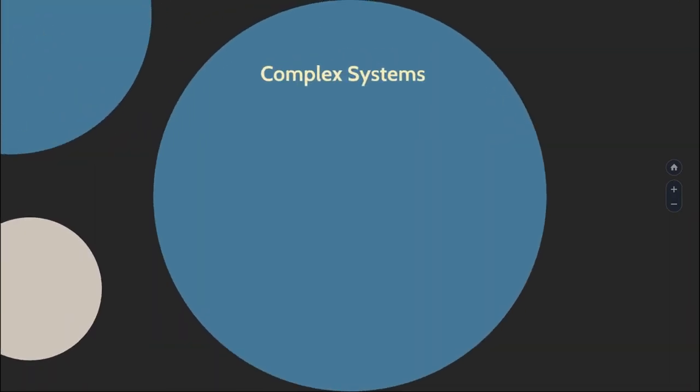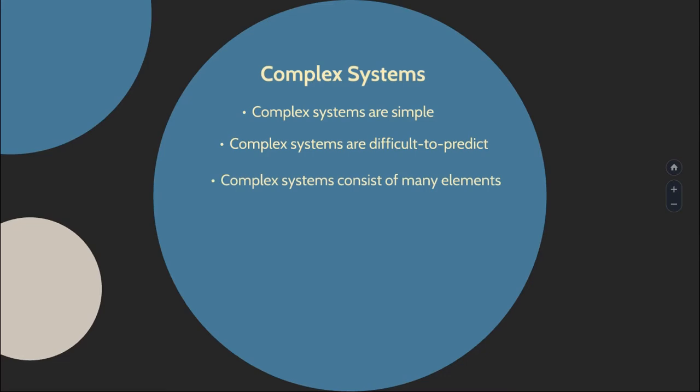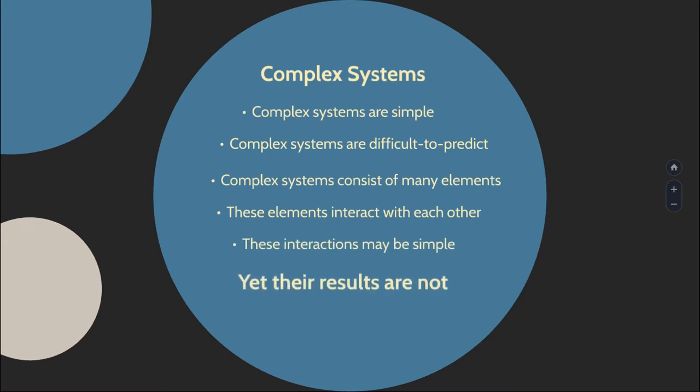A complex system is usually simple. It doesn't have to be complicated. But even though it's simple, it's very often very difficult to predict. Most of them consist of many elements, and those elements interact with each other. Their interactions may be simple, yet the results of those interactions are not.